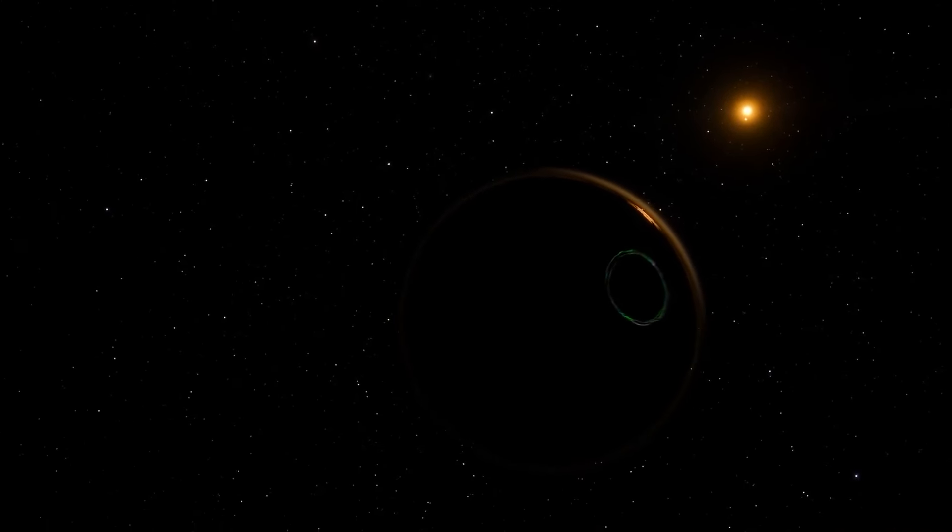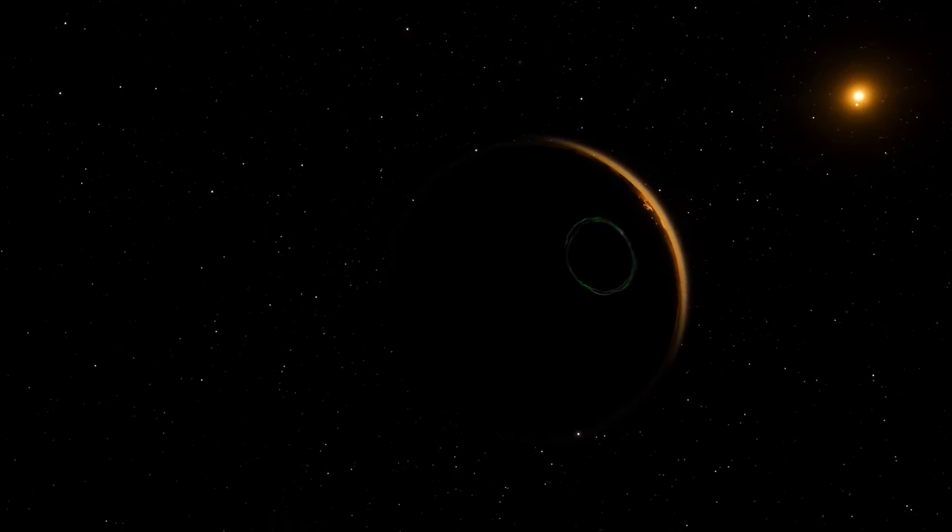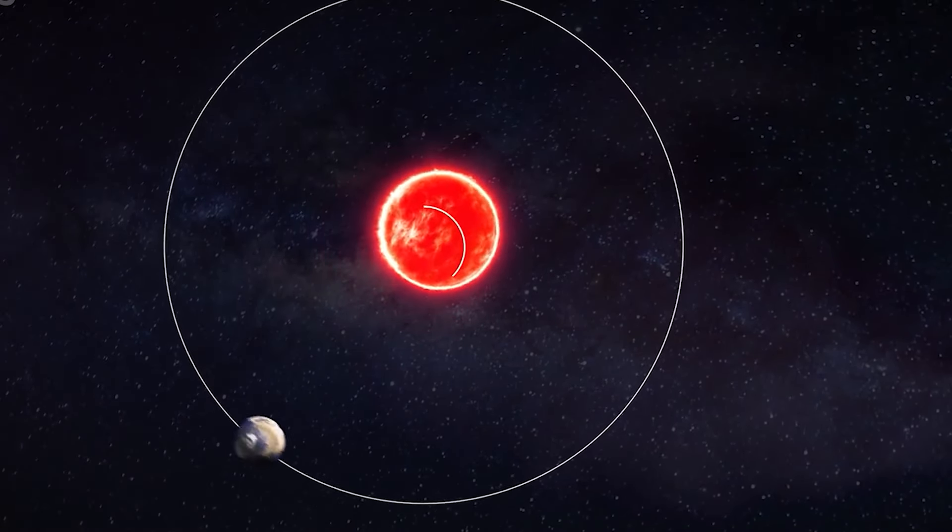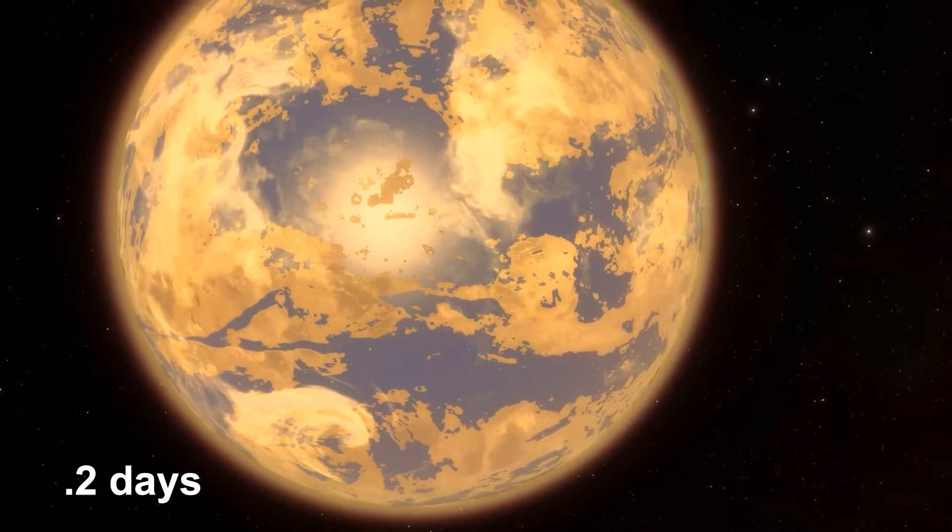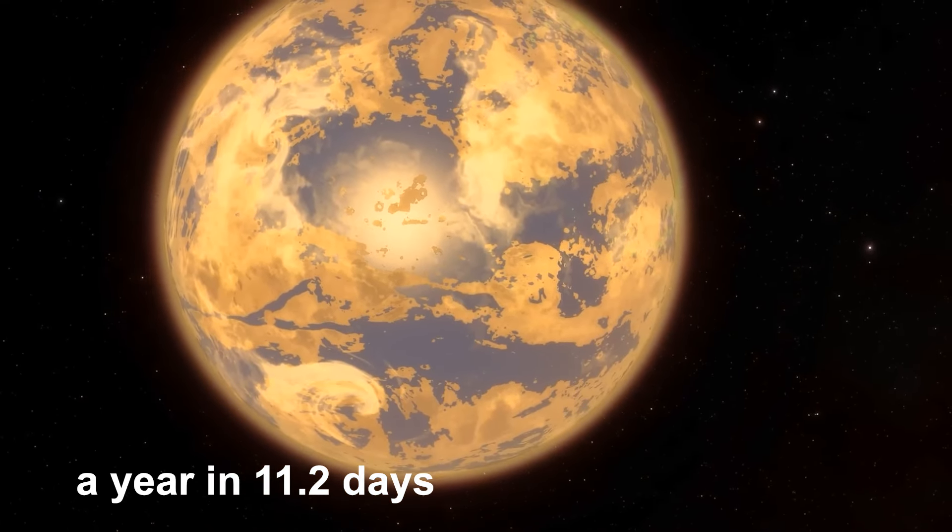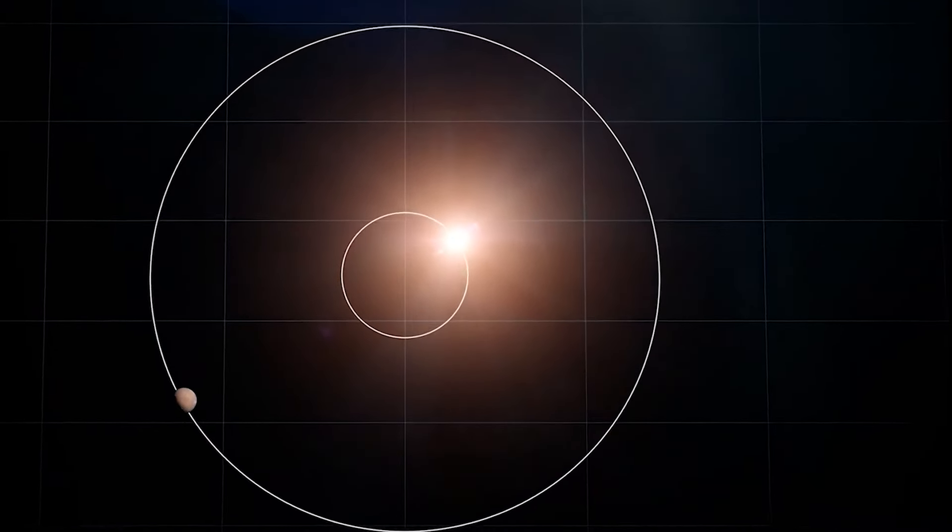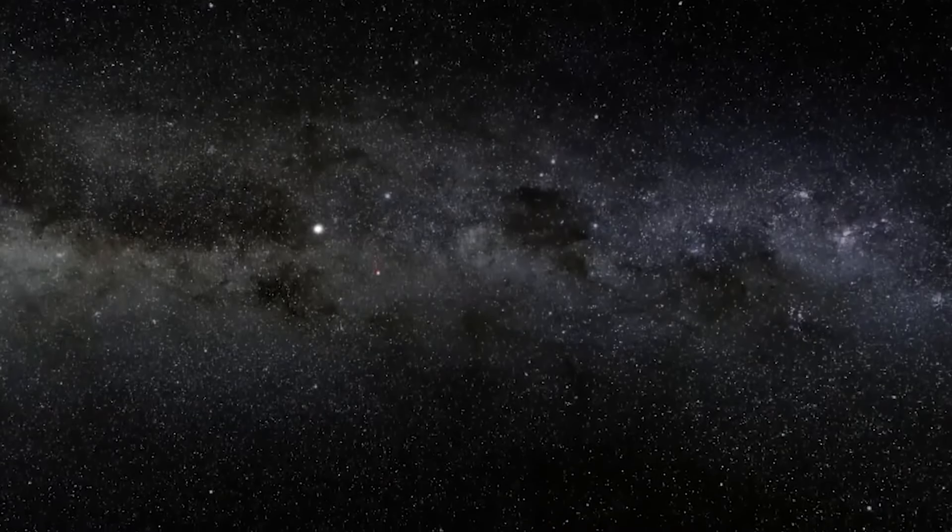Proxima b's proximity to its star presents unique challenges and opportunities for researchers. The exoplanet's orbit is just a fraction of the distance between Earth and the Sun, completing a year in 11.2 days. This orbital results in tidal locking, with one side of Proxima b in perpetual daylight and another in eternal darkness.